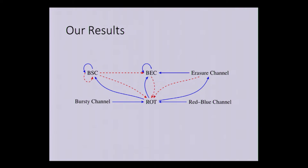Now let me move on to our results. The first question we investigated was whether you can use one channel to realize another channel non-interactively — we do know how to do it interactively. We have various results here: the blue lines denote positive results, and the red ones denote negative results. Starting with the binary erasure channel, we show it is sort of self-reducible: if you start with an erasure channel where the bit is passed with probability p, you can amplify or diminish that probability to any value of your choice, up to a small error that you can make as small as you want.